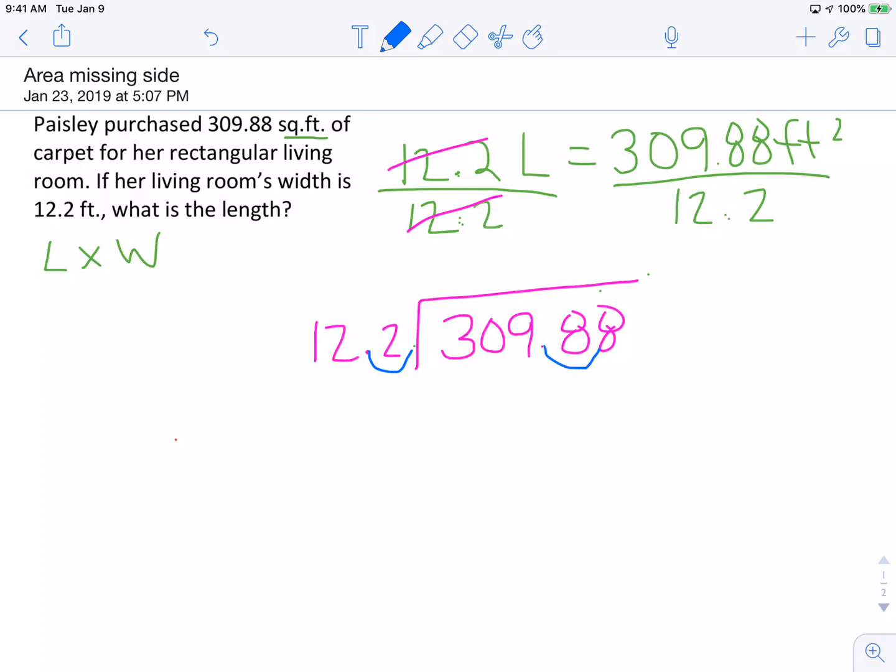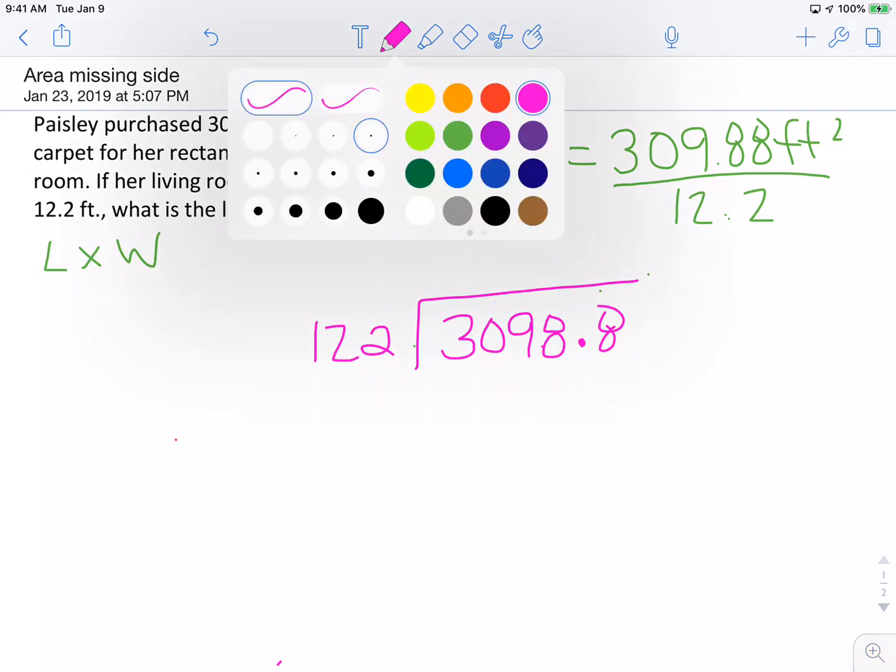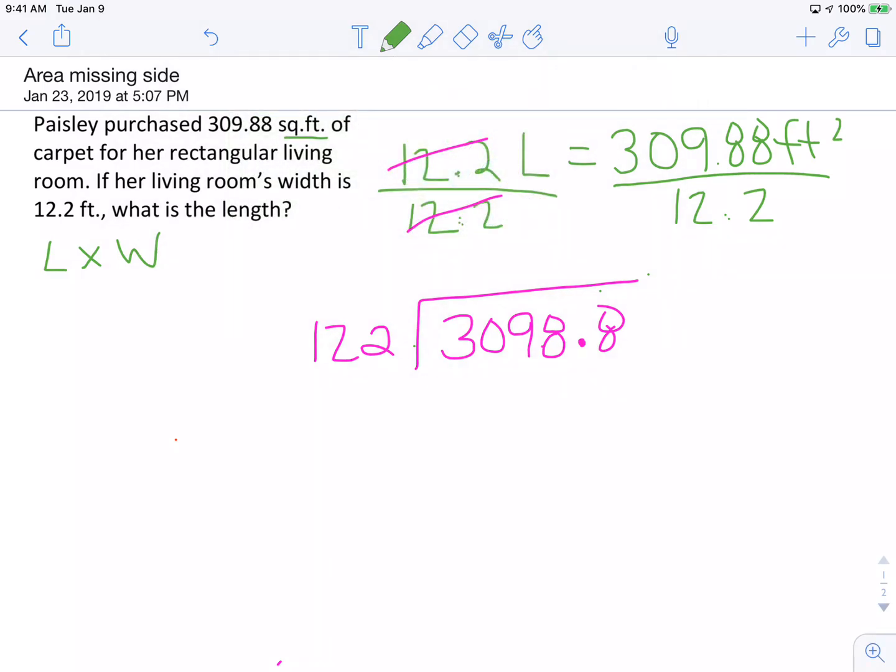So now my decimal is over here. I don't have a decimal in the divisor anymore. Now I can divide. Remember when you divide using a decimal, you're going to just take the decimal and move it up to the top. Okay, then you just divide.